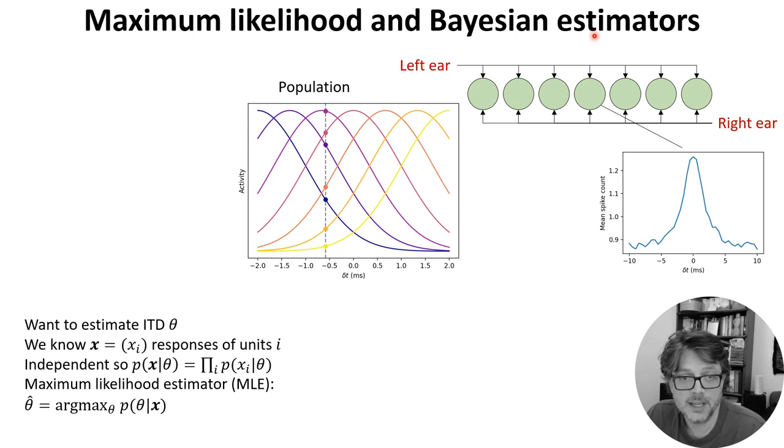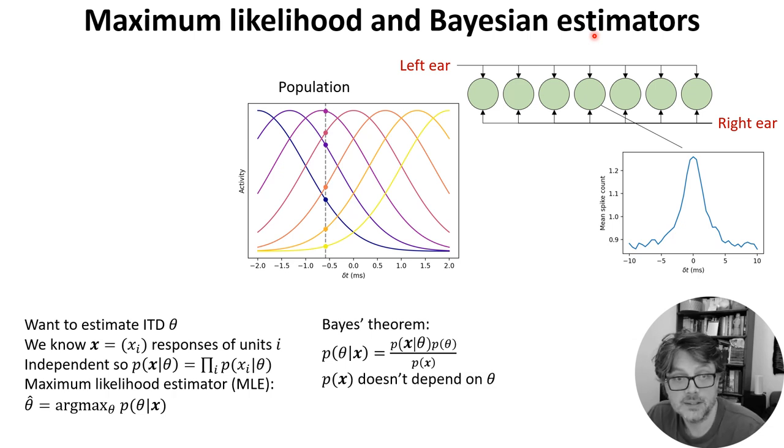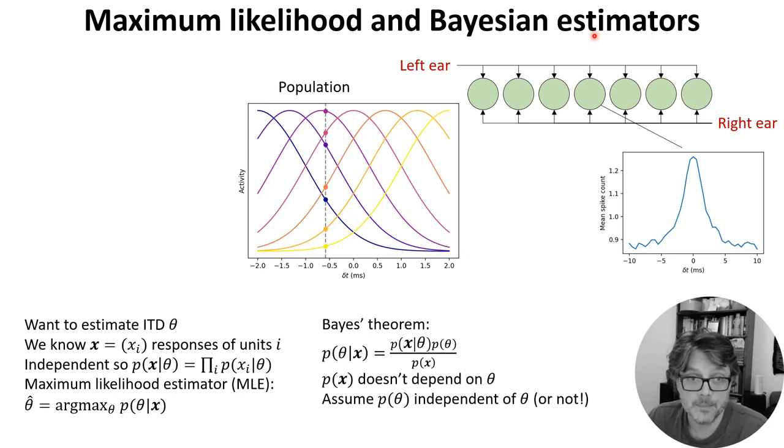Then our maximum likelihood estimator is the value of θ that makes the observed response the most likely. But we don't know this probability of θ given x, only the reverse. And that's where Bayes' theorem comes in, because it lets us calculate one in terms of the other. In particular, since we're computing an argmax over θ, we can ignore any term that doesn't depend on θ, and so we can ignore this P of x. If we assume that all of the values of θ are equally likely, we can also ignore the P of θ term. On the other hand, if we have a prior of which ITDs are more likely than others, we can also incorporate this here. And then the method is known as maximum a posteriori, or MAP estimation. Now we can express the estimate we want in terms of things that we can calculate.